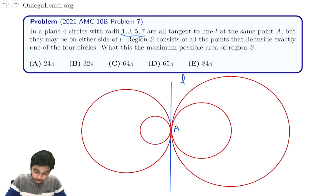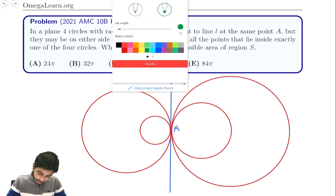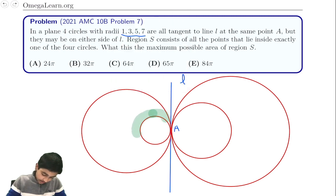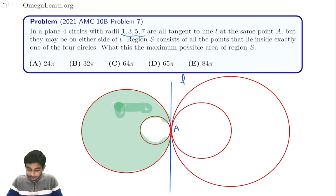So in this configuration, the region that we would have is something like here on the outside. Like here. Something like that. This is the region that we would be carving out. And the same thing on the other side.